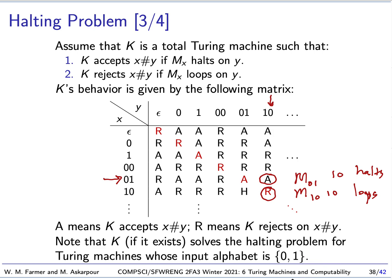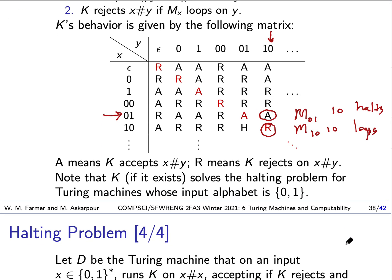And for instance, down here we have a reject. That means that M10 on 10 here loops. So this halts, this loops. So that's what K does. And the important thing to note is that K solves the halting problems for Turing machines whose input alphabet is 0 and 1. So it doesn't solve the halting machine for all Turing machines. It just halts, solves it for Turing machines with inputs alphabets consisting of 0 and 1.